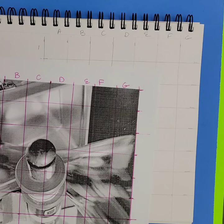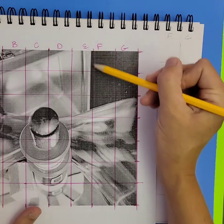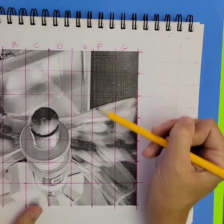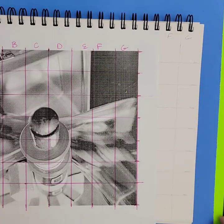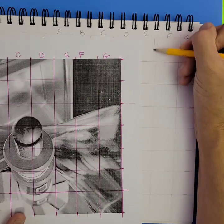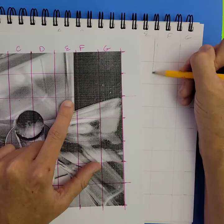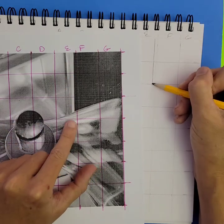Start out with the easiest parts first and then get into the more complicated areas. So looking at my photograph, I might want to start out with drawing just this sort of rectangular area first because it is going to be fairly straightforward and simple following that line and shape down.